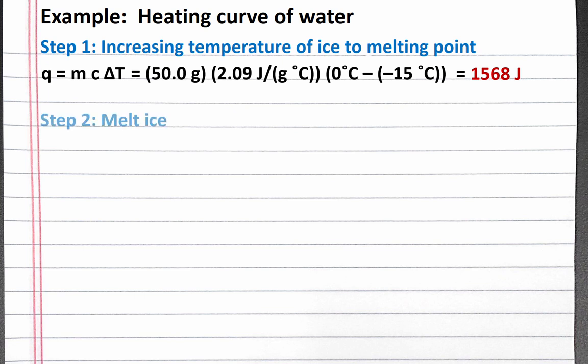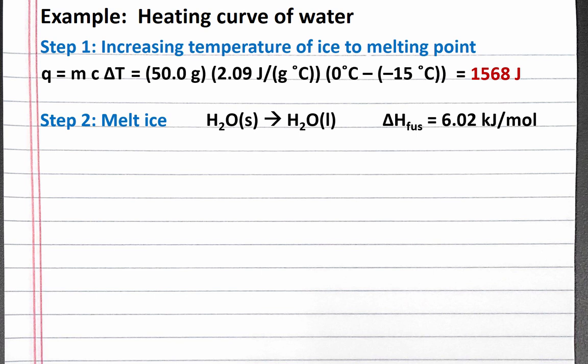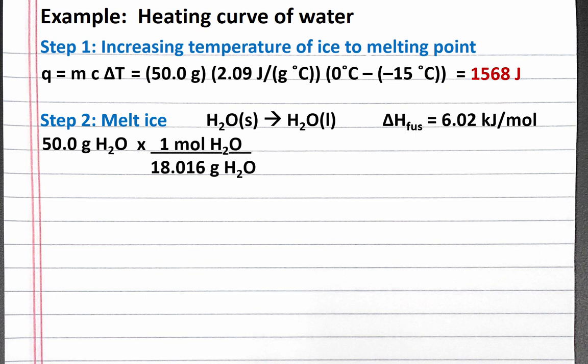Next, we need to melt the ice. We're given the enthalpy of fusion, and fusion is changing from a solid to a liquid, so we can use dimensional analysis to convert our mass of ice to the energy needed to melt it. We'll start our dimensional analysis with 50 grams of H₂O. We can convert from grams to moles using the molar mass, and we can use the enthalpy of fusion to convert from moles of H₂O to kilojoules of energy. Completing the calculation, we get 16.71 kilojoules.